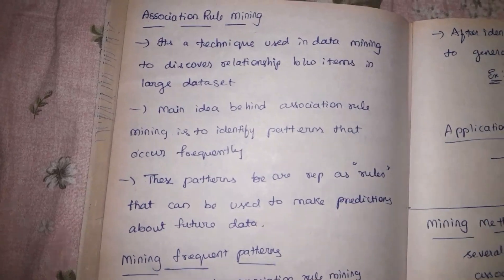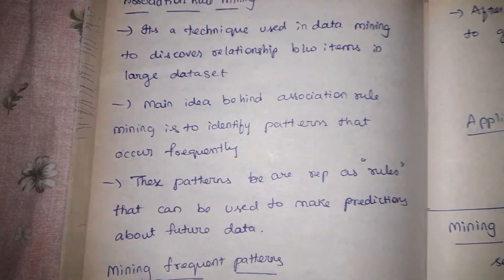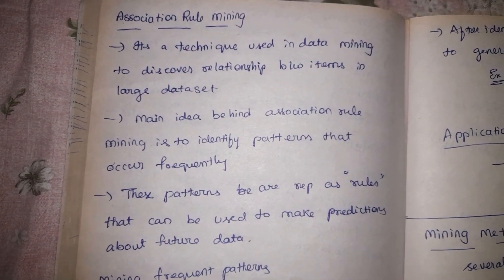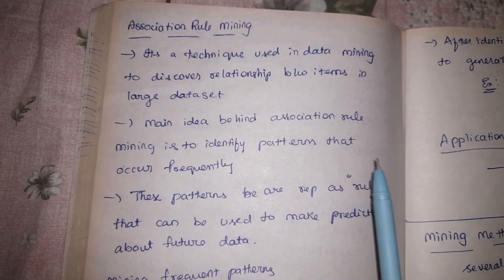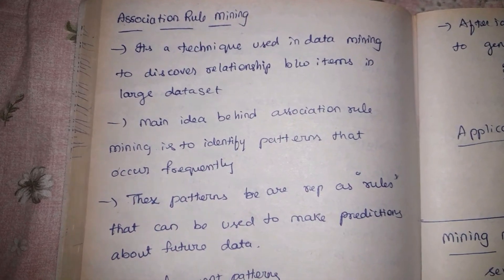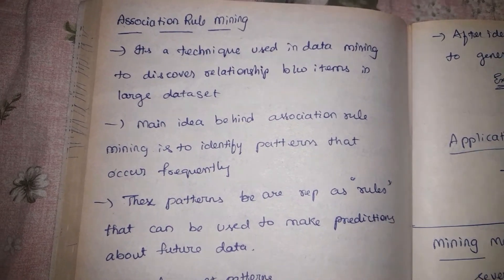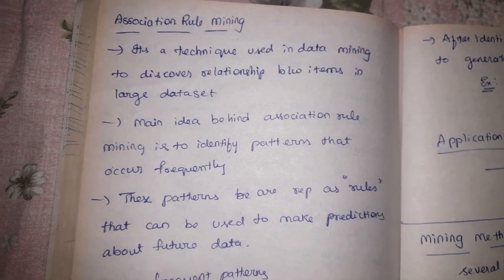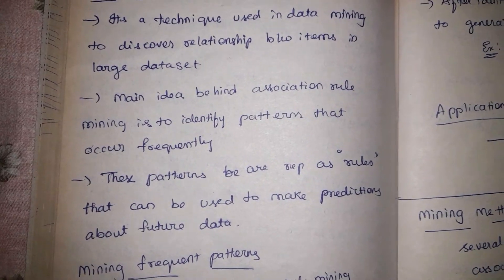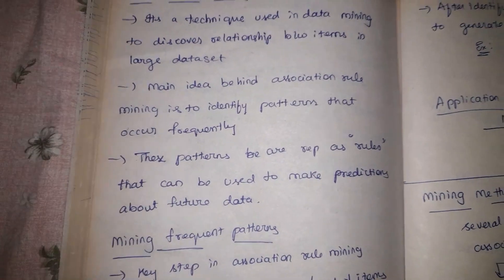In this video we are going to talk about association rule mining. This is one of the techniques of data mining. Before trying to understand association rule mining, let's try to understand what association means. Association simply means a relationship, a connection between two items over a particular dataset — that is basically association.